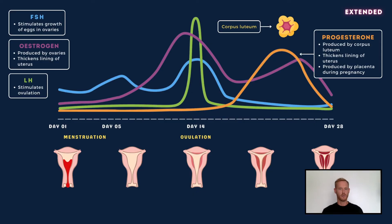Like oestrogen, progesterone thickens the uterine lining and promotes the growth of blood vessels. If fertilisation occurs, the corpus luteum continues to secrete progesterone and the receptive uterine lining is maintained. If, however, fertilisation does not take place, the corpus luteum stops producing progesterone, resulting in the breakdown and shedding of the thickened lining.